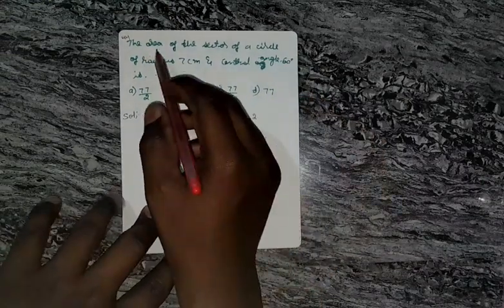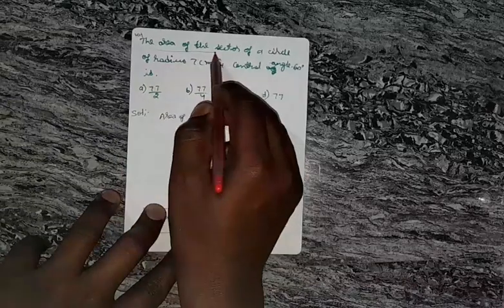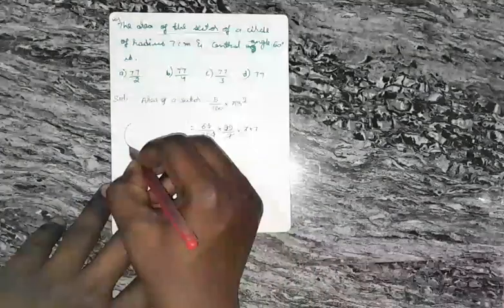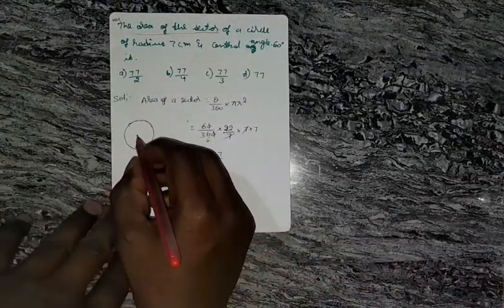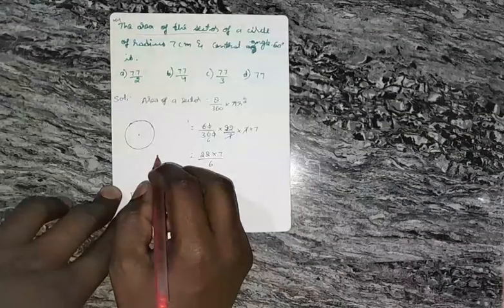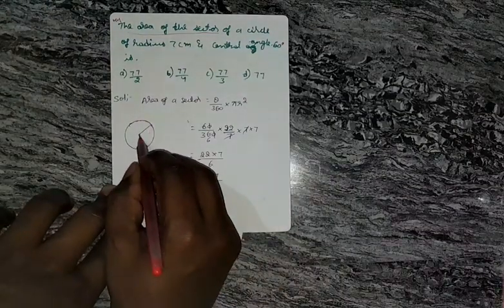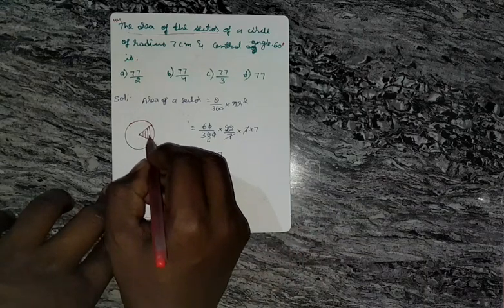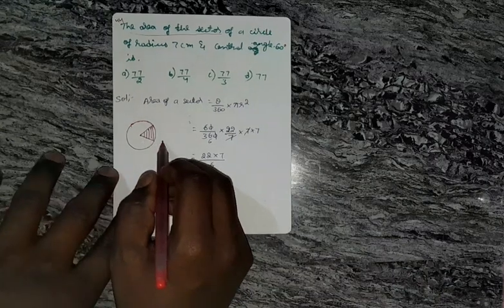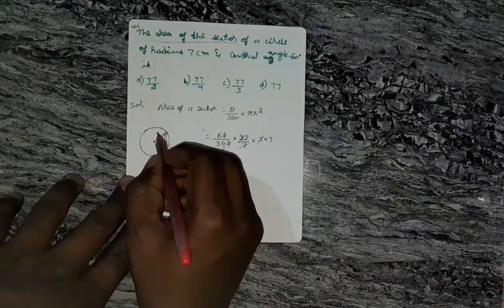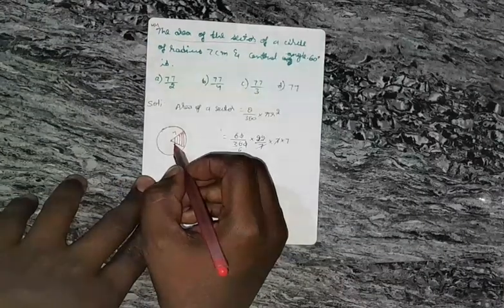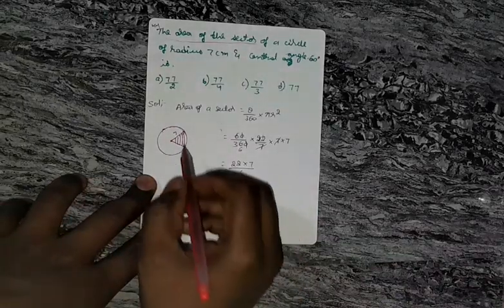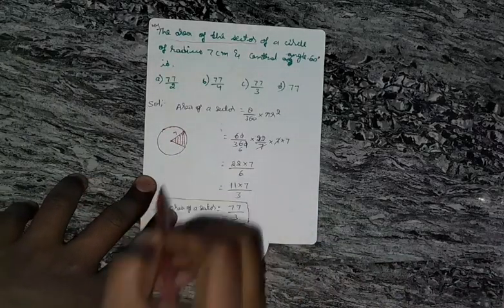That is, they are asking area of a sector. If this is the circle, center point, this is the sector. Here, they are given radius is 7 cm. Radius is 7 cm from this point to this point. And they are asking this area, this shaded area.